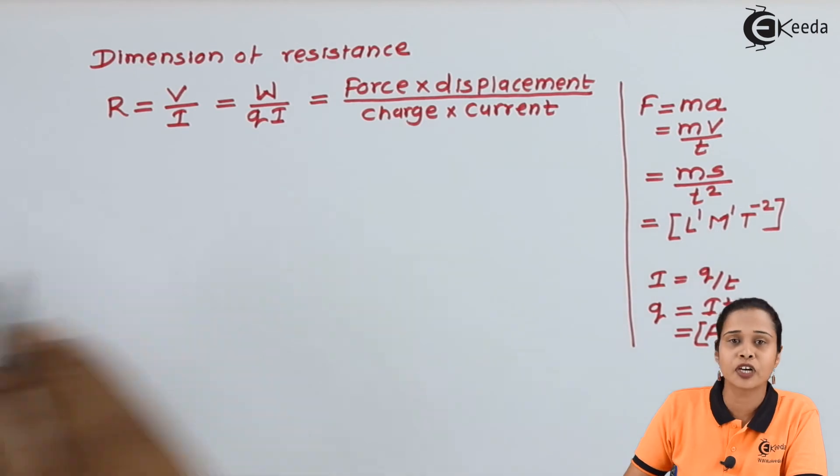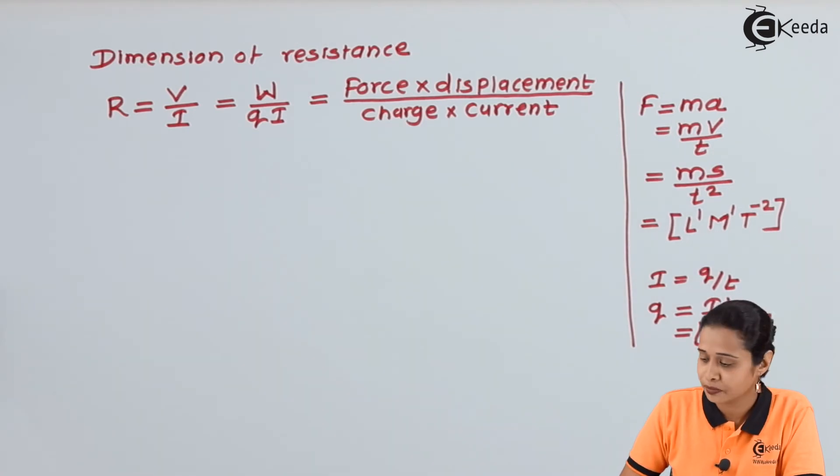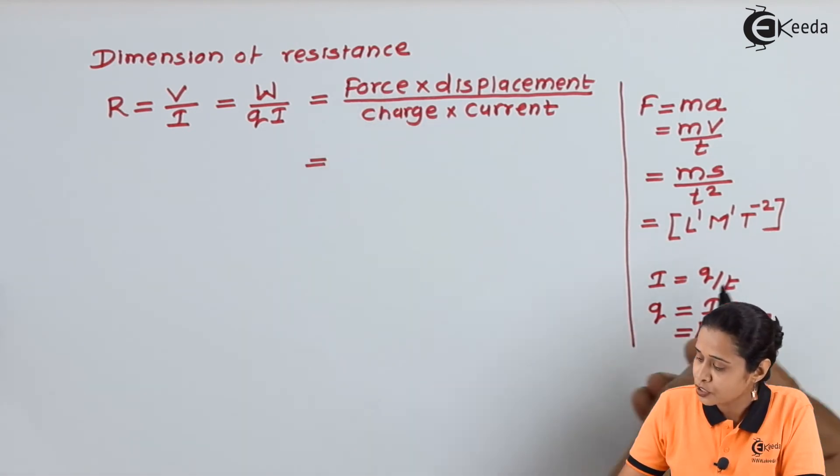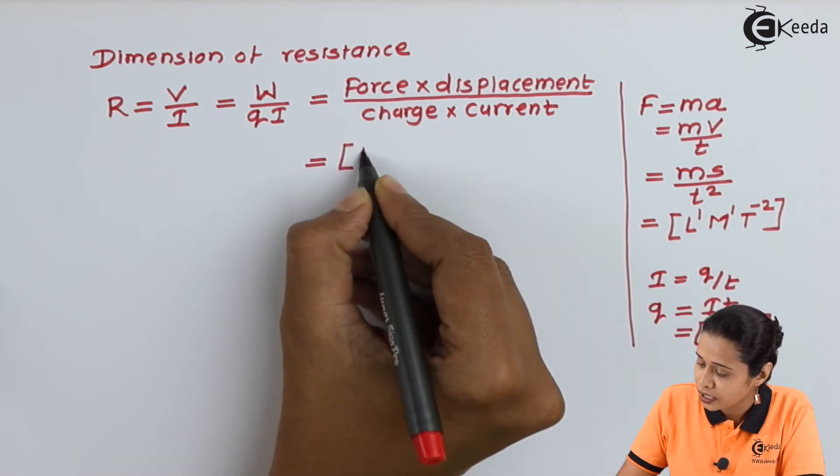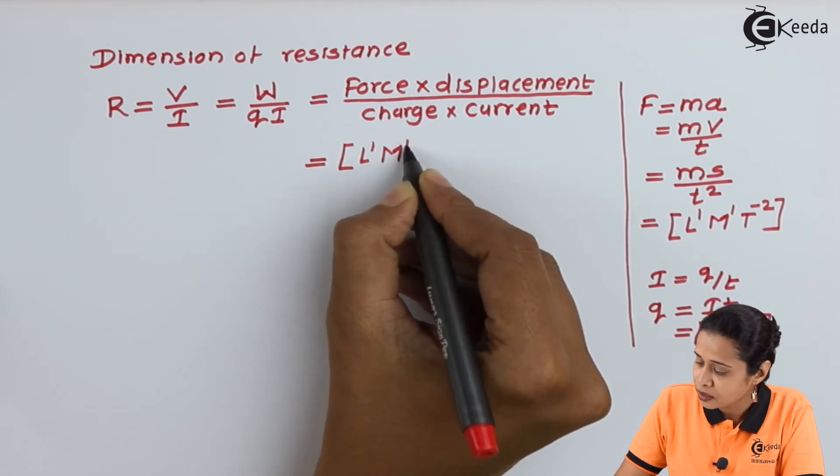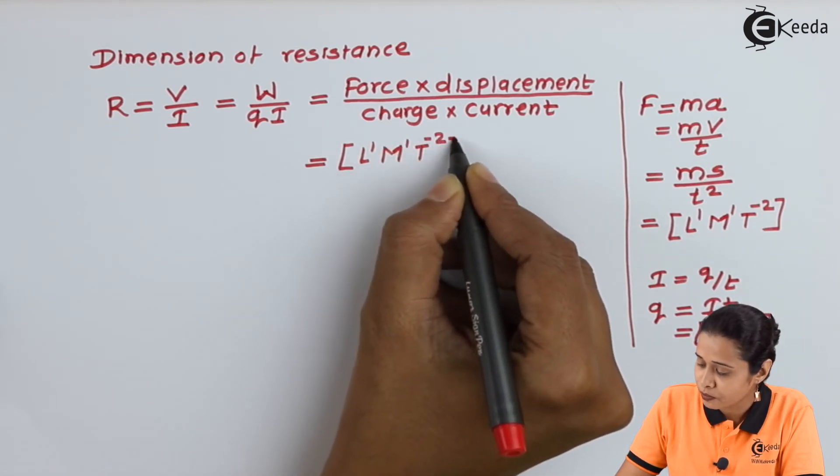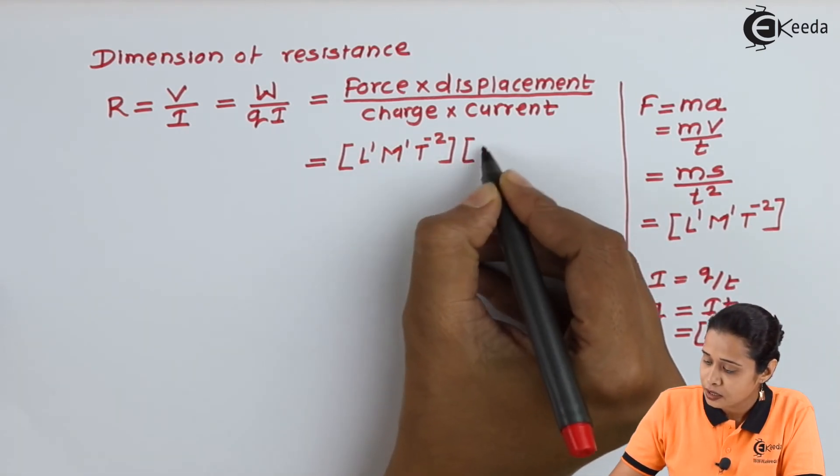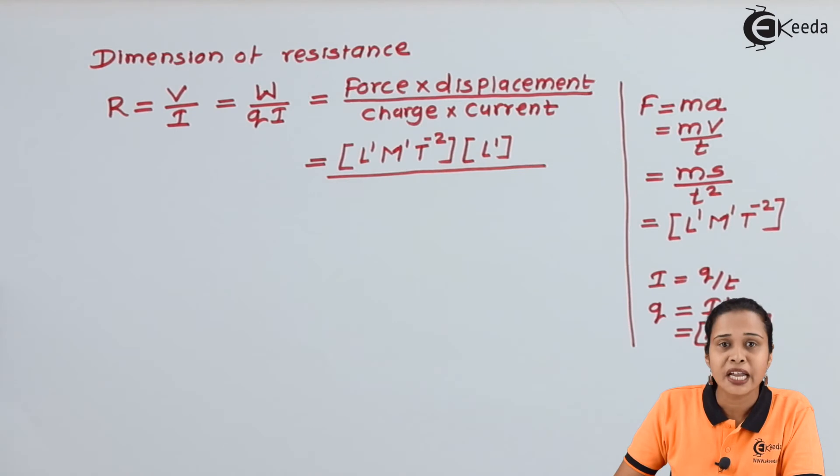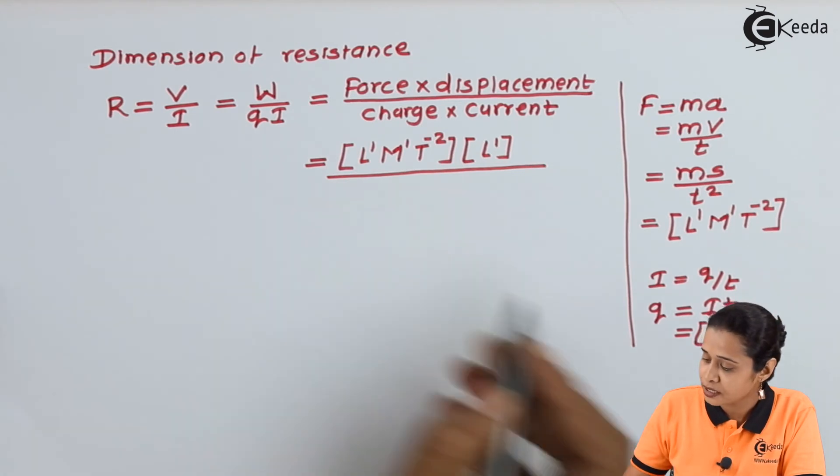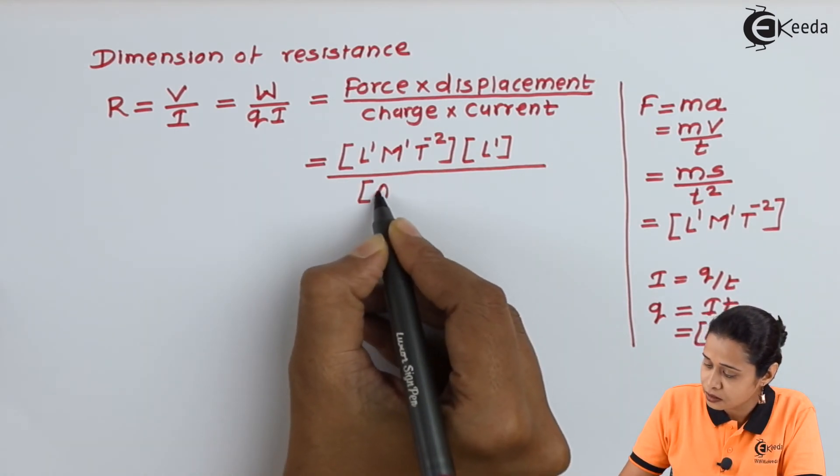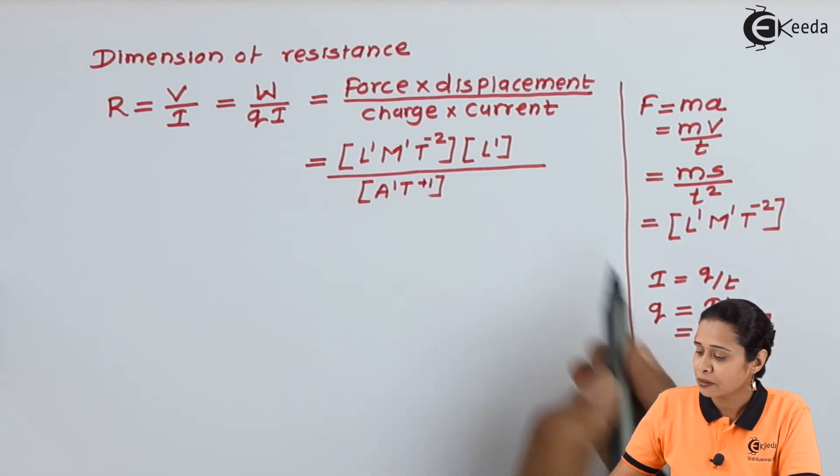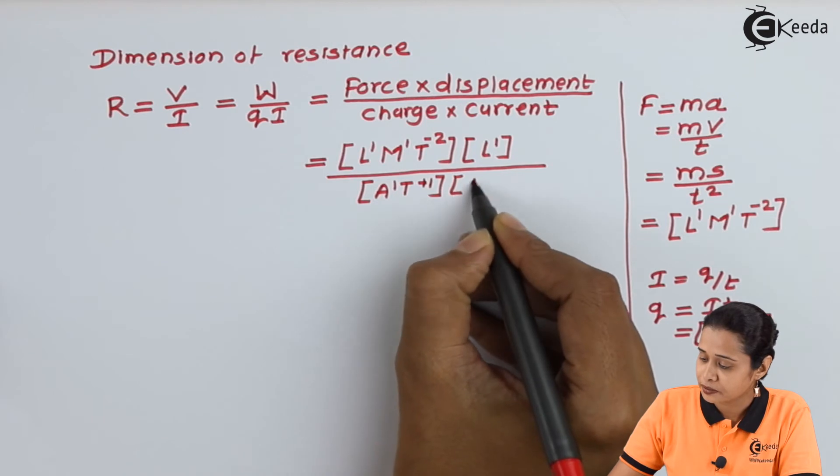And dimension of current is A. Let us substitute these values in the equation. Dimension of force is L¹M¹T⁻². Dimension of displacement is L¹. Dimension of charge is A¹T¹. And dimension of current is A¹.